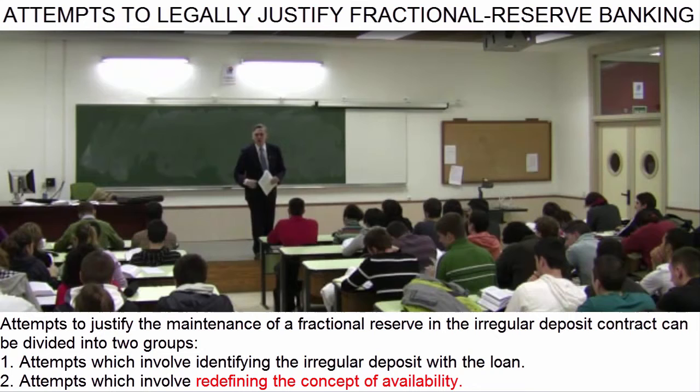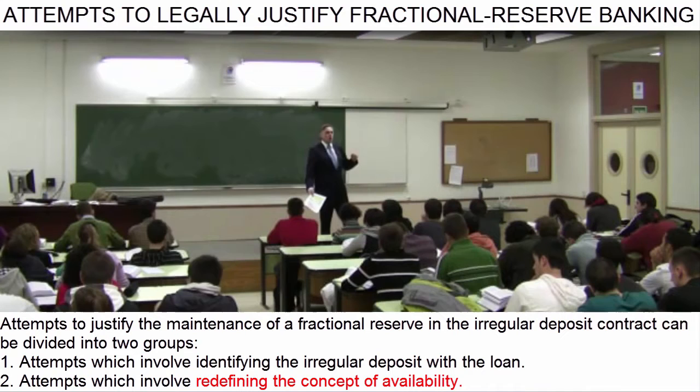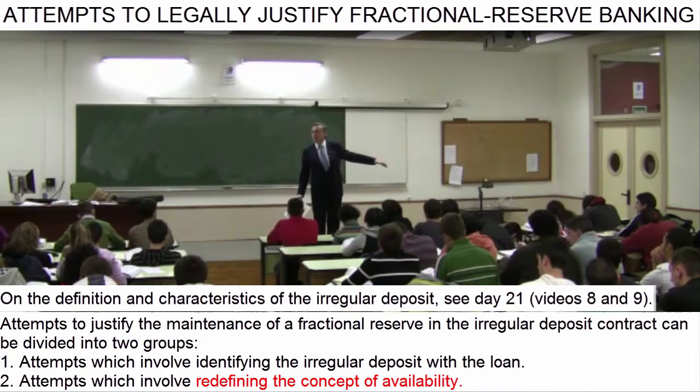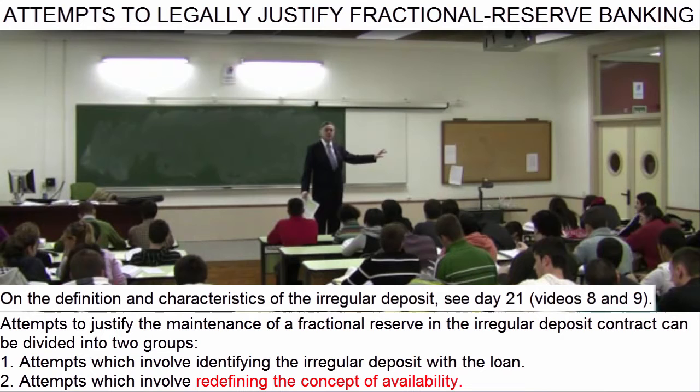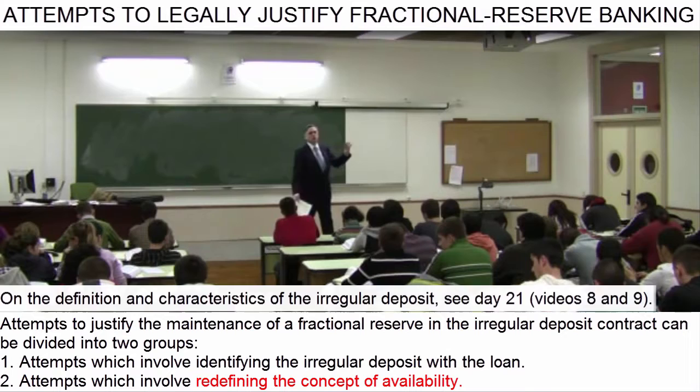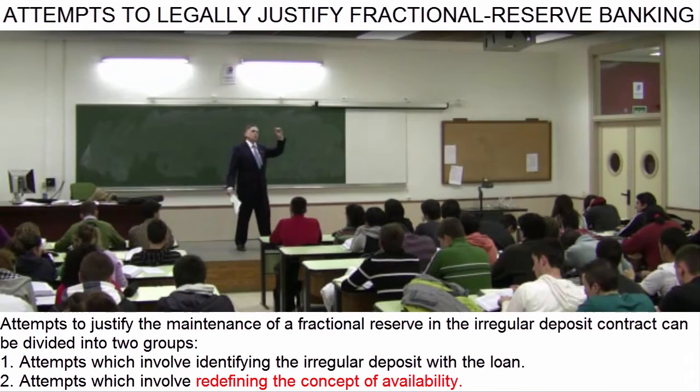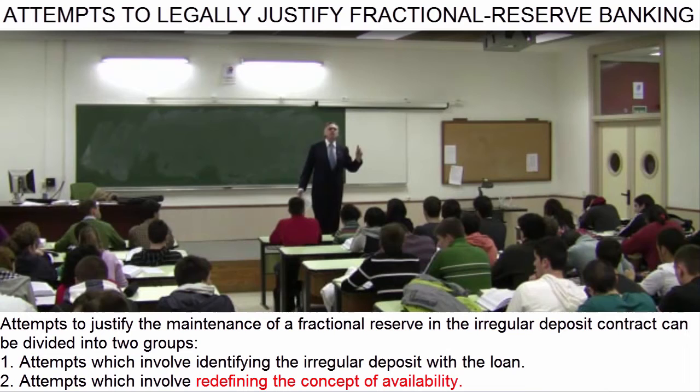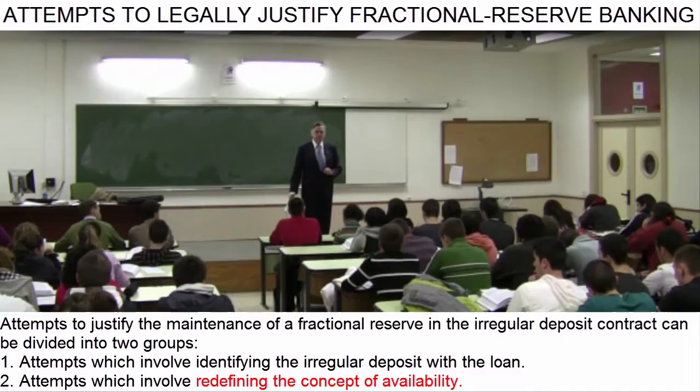The recognition that what bankers receive in a deposit is paired with a redefinition of the concept of availability. Availability loses its true meaning — that is, the constant maintenance of 100% of the tantundem at the disposal of the depositor, so that whenever he or she goes to withdraw the money, it is there. Instead, the concept of availability is redefined. Now, availability means compliance with a set of regulations from the central bank and the prudent investment of depositors' resources.